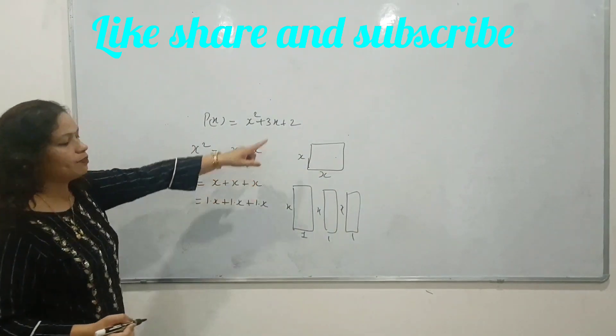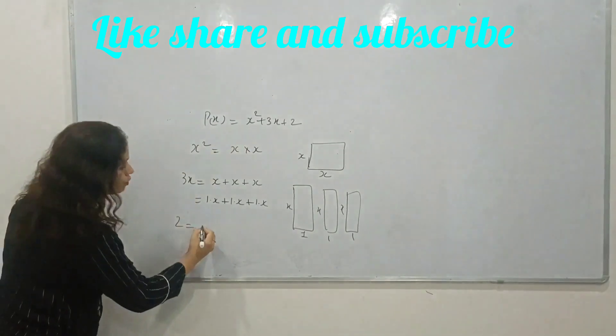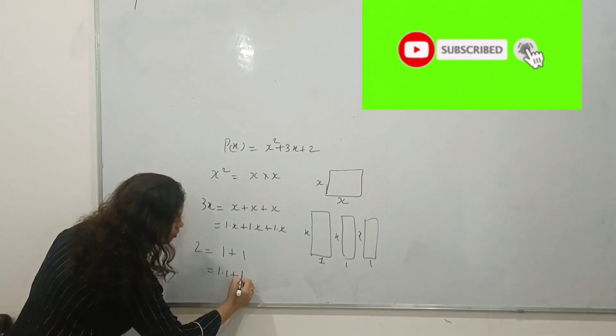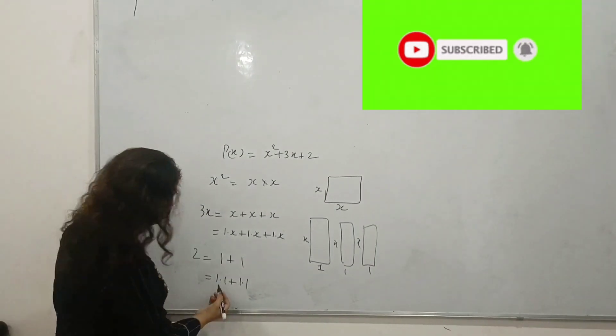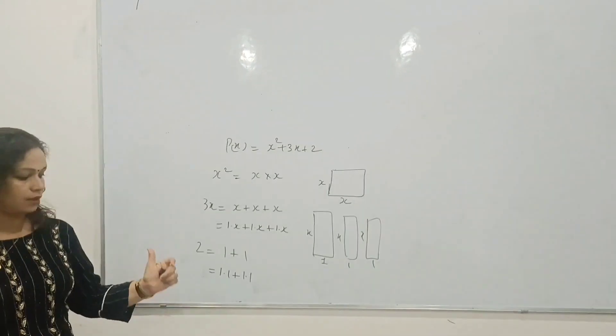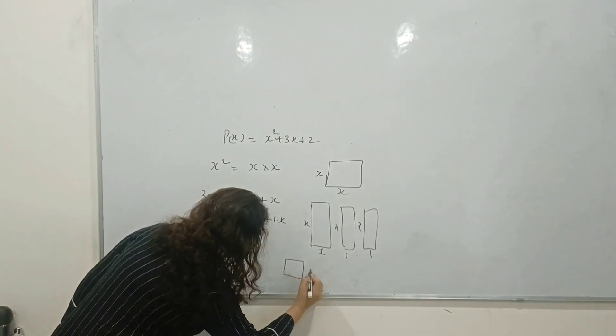Now come to the third part, which is 2. Let's draw the third part. 2 equals 2. We will write 1 plus 1, and we can also see 1 times 1 plus 1 times 1. Now, 1 and 1 both are the same length, so it is related to the area of the square.